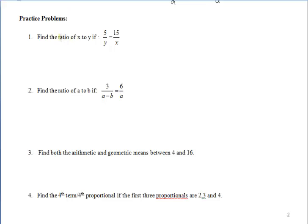For number 1, we want to find the ratio of x to y if we're given the following proportion. First thing I'd be thinking about is cross-multiplying here. So let's go ahead and cross-multiply and use the means-extremes product theorem, which leaves us with 5x is equal to 15y.